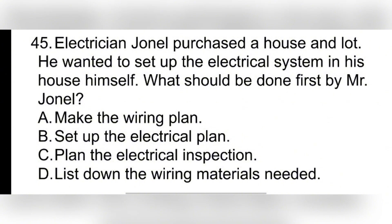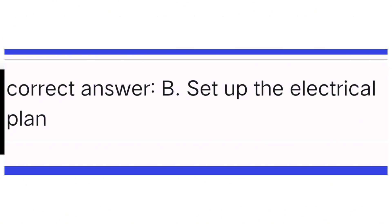Question 45. Electrician Mr. Jonnell purchased a house and lot. He wanted to set up the electrical system in his house himself. What should be done first by Mr. Jonnell? A. Make the wiring plan. B. Set up the electrical plan. C. Plan the electrical inspection. D. List down the wiring materials needed. Correct answer: B. Set up the electrical plan.